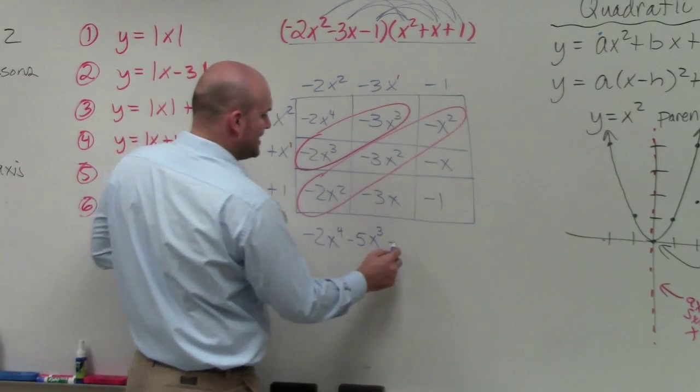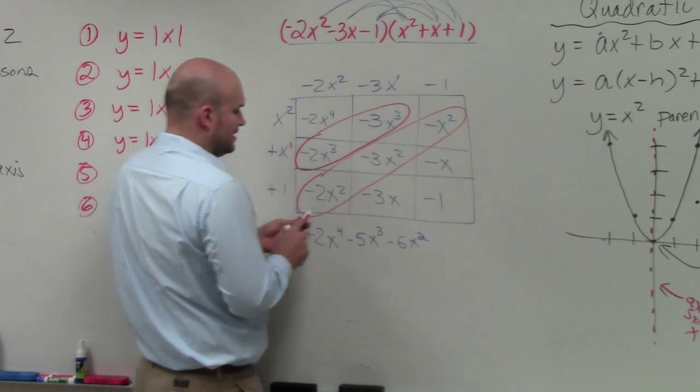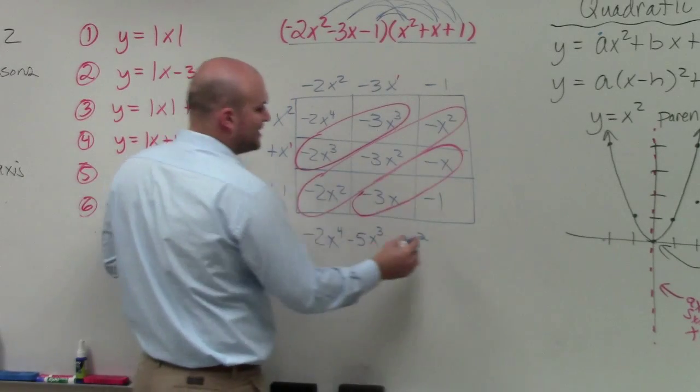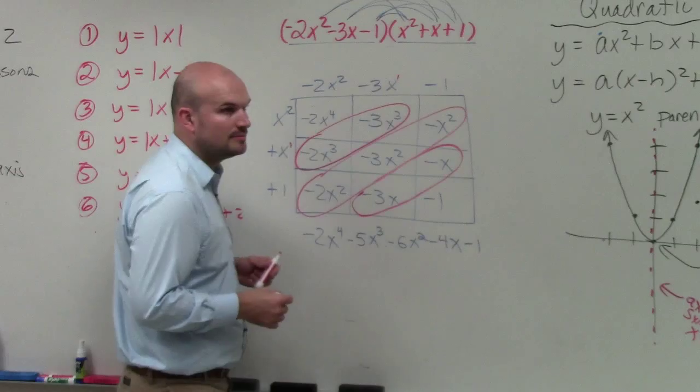Here, that's going to give me a negative 6x squared. And then here, these are all like terms. This gives me a negative 4x minus 1, and that's done.